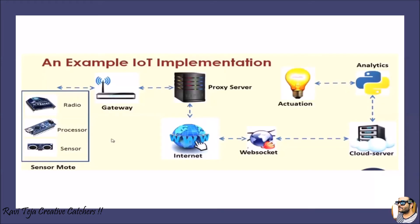As an example of IoT implementation: on the left side, there is Zigbee, which handles data transfer via radio signals. There might be a controller, a processor, and sensors — all under the IoT device setup. From there, using a router or local network, signals are sent to a proxy server. The proxy server is connected to the whole internet, allowing worldwide communication. From there, data goes to a web socket, is stored in a server, and whenever required that data can be processed and used for analytics.